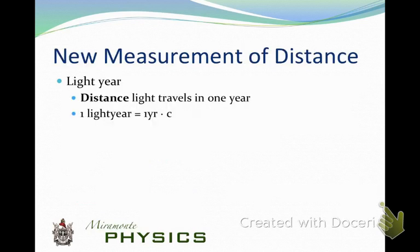A new unit: a light year is not a time — it is a distance. A light year is the distance that light travels in one year: c = 3×10⁸ m/s multiplied by the number of seconds in a year, giving an answer in meters.